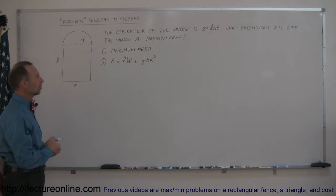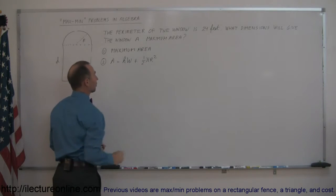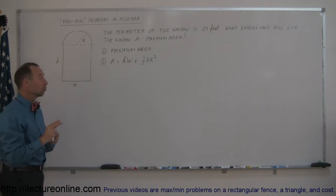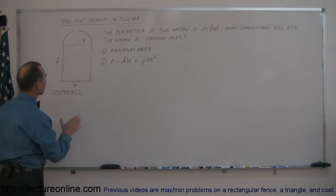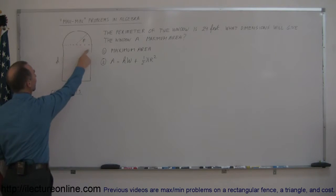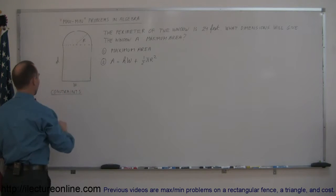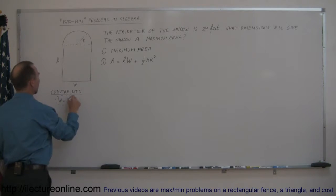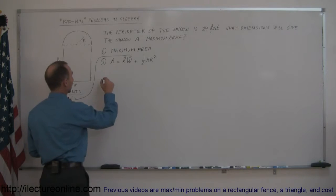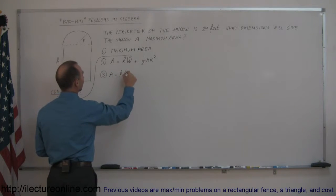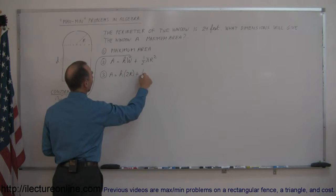The next thing we need to do is express the area in terms of only one variable. There are three variables: height, width, and the radius of the semicircle. So we need two constraints to eliminate two of those three variables. The first constraint is the relationship between the width of the window and the radius. The width would clearly be twice the radius, so: width equals two times the radius. We can use this constraint by plugging it into our equation to get rid of w. So now we can write that the area is equal to h times 2r plus one-half pi r squared.